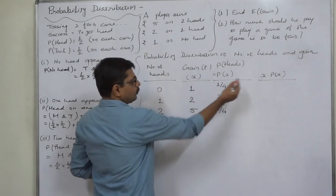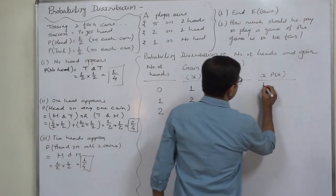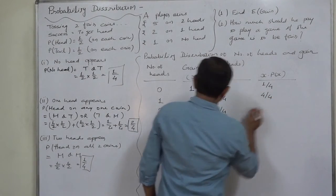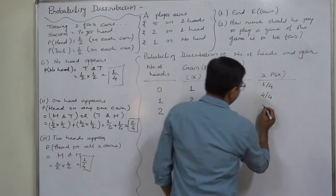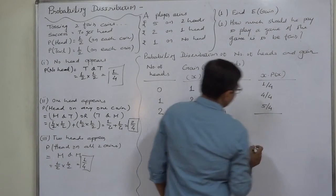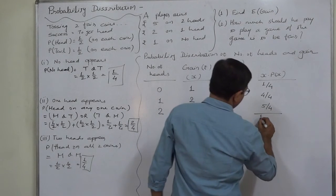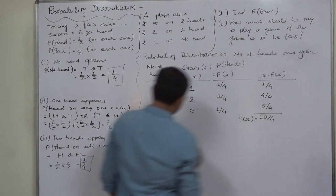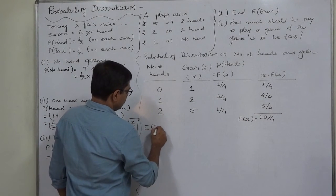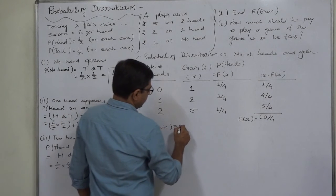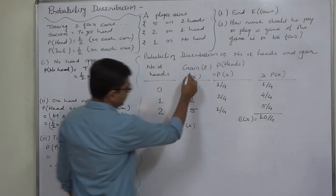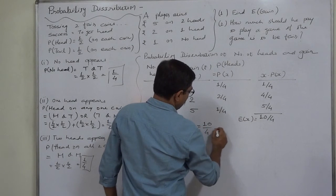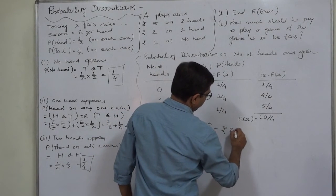We can now calculate the expected gain. E(X) = sum of x times P(x): one times one-quarter equals one-quarter; two times two-quarters equals four-quarters; five times one-quarter equals five-quarters. So E(X) equals ten-quarters, which is rupees two point five zero.